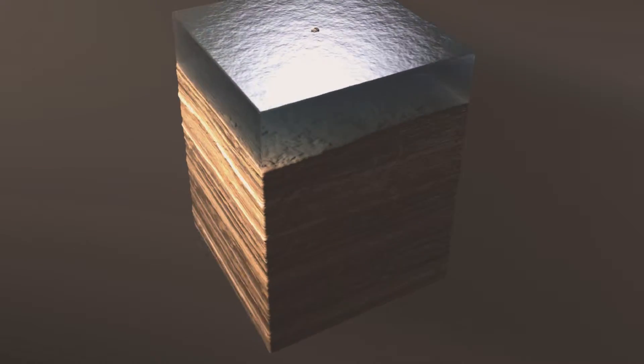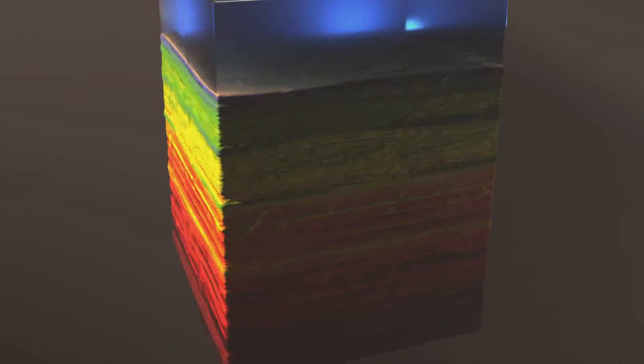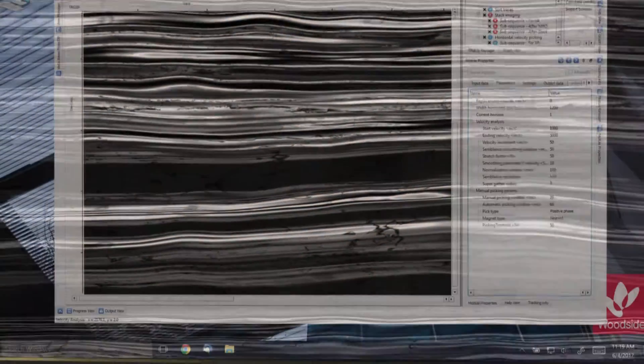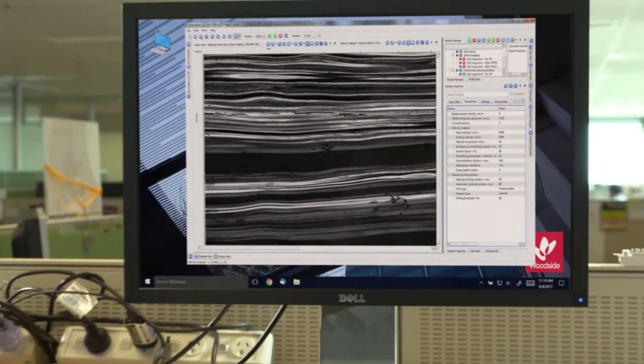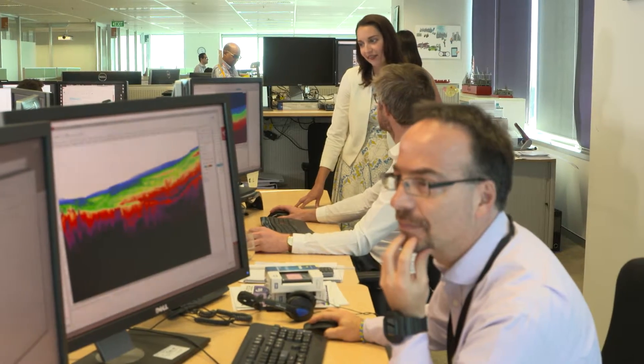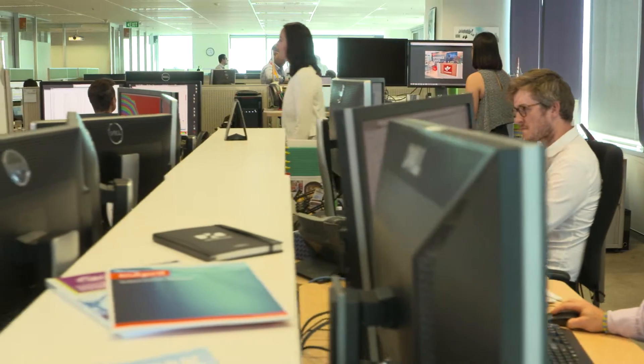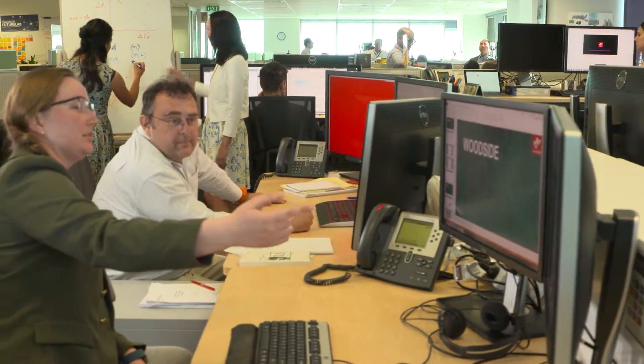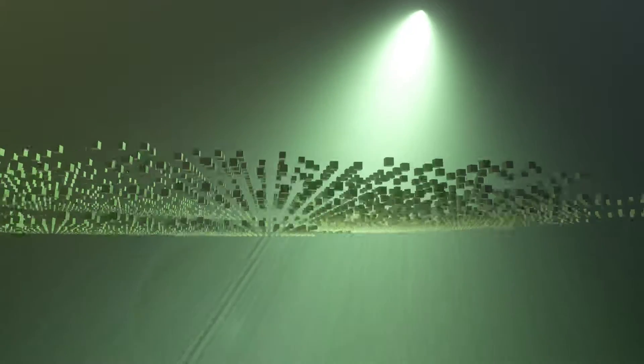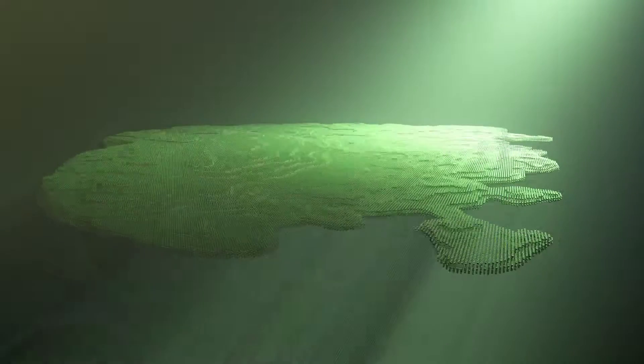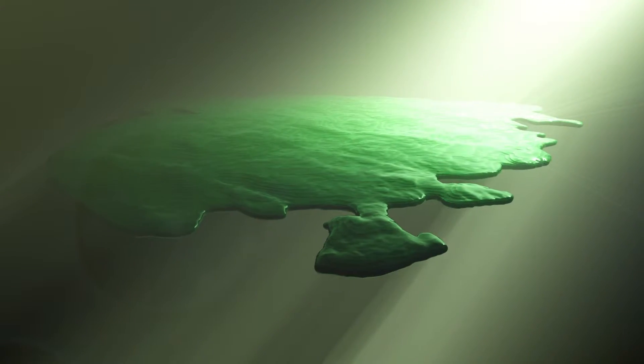Once a survey is complete, the recorded data is sent to computer processing centers where detailed subsurface images are created using specially designed software. Geoscientists use the processed images and original data to interpret the subsurface geology and identify areas where oil or gas reservoirs might be located. Interpretation can take 12 to 18 months depending on the amount of data collected and the complexity of the geology.